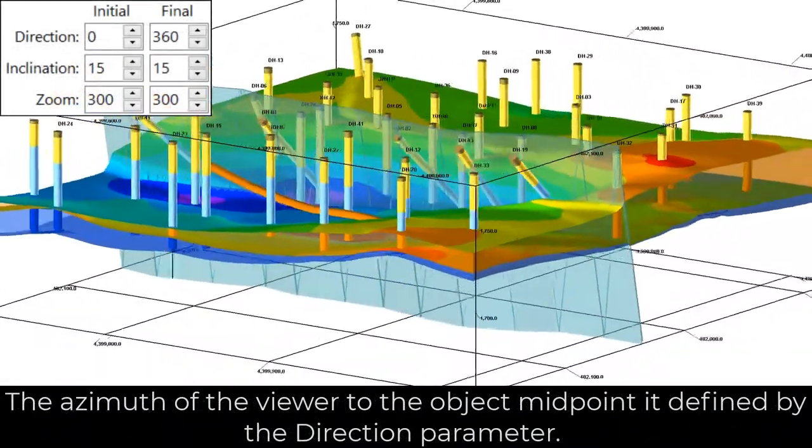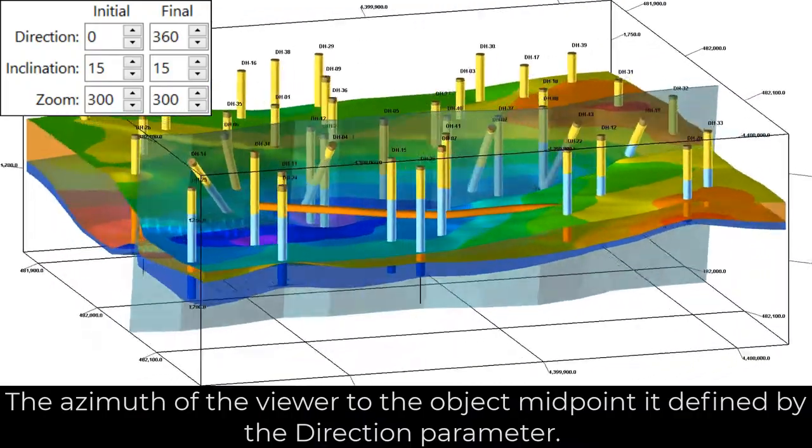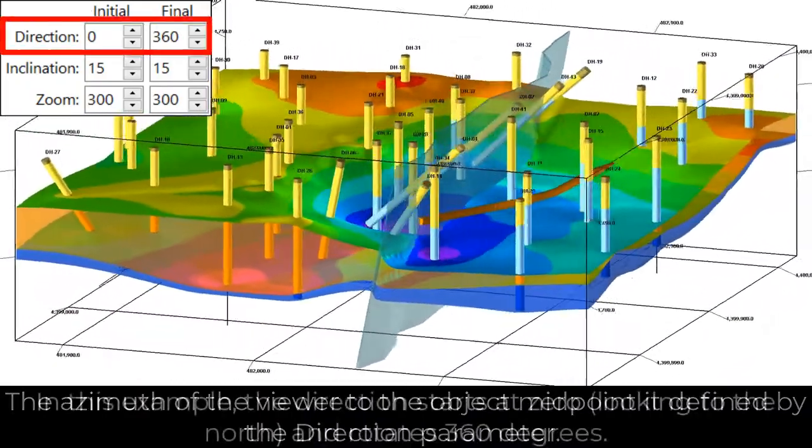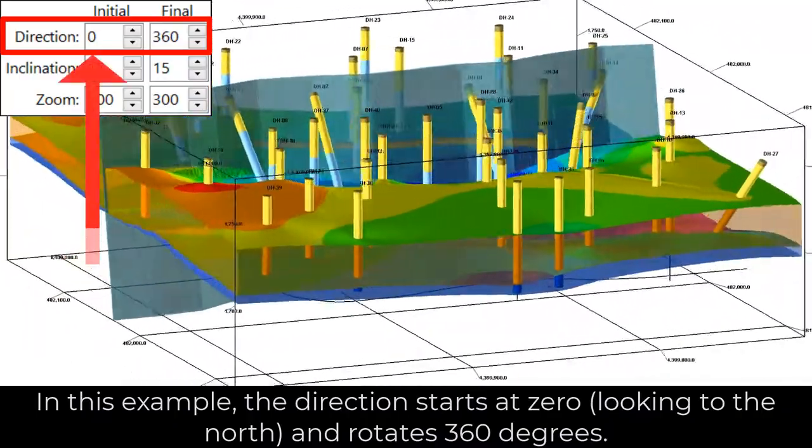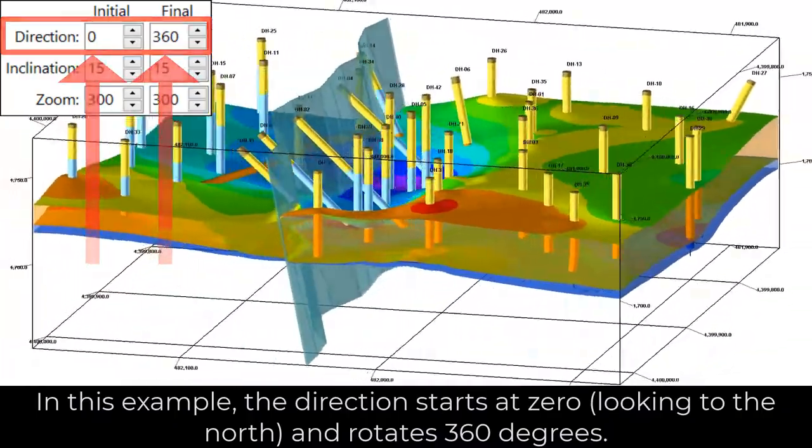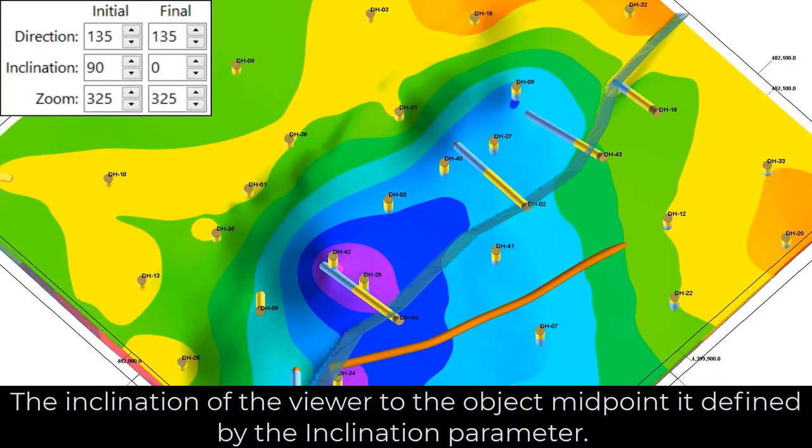The azimuth of the viewer to the object midpoint is defined by the direction parameter. In this example, the direction starts at zero looking to the north and rotates 360 degrees.